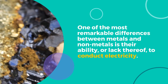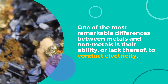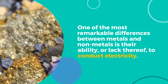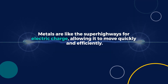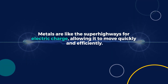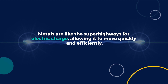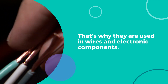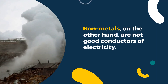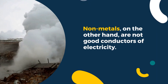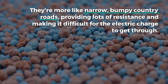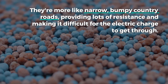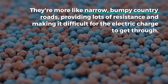One of the most remarkable differences between metals and non-metals is their ability, or lack thereof, to conduct electricity. Metals are like the superhighways for electric charge, allowing it to move quickly and efficiently — that's why they are used in wires and electronic components. Non-metals, on the other hand, are not good conductors of electricity. They're more like narrow, bumpy country roads, providing lots of resistance and making it difficult for the electric charge to get through.